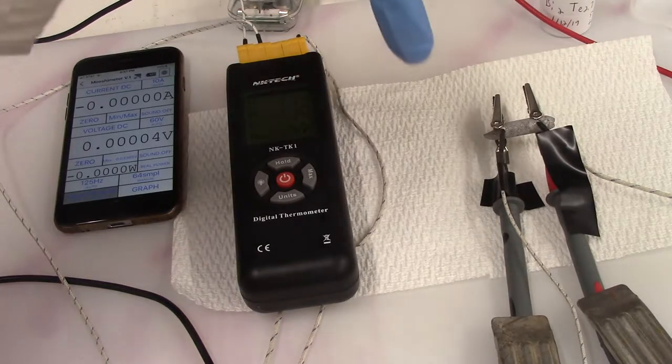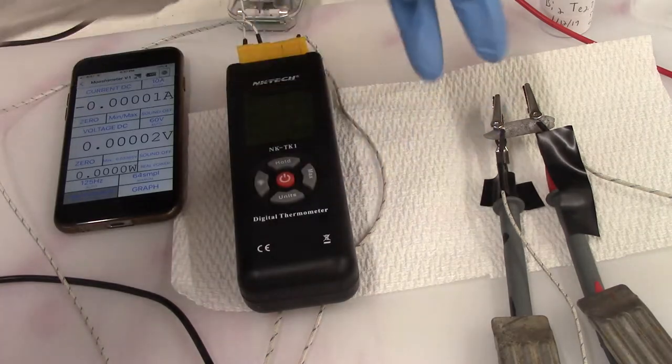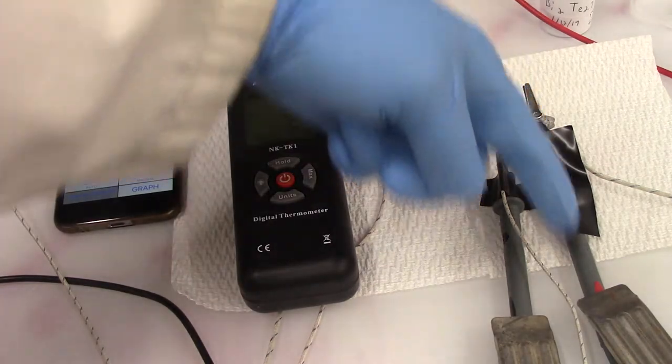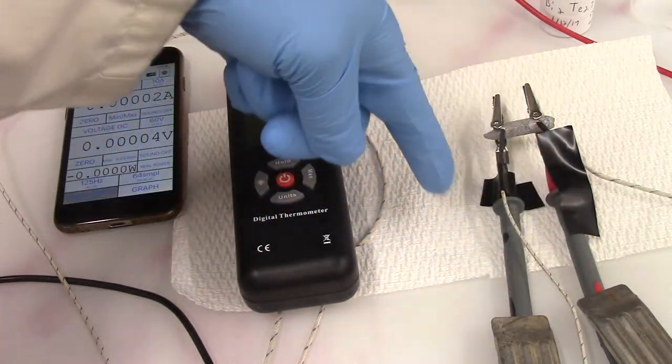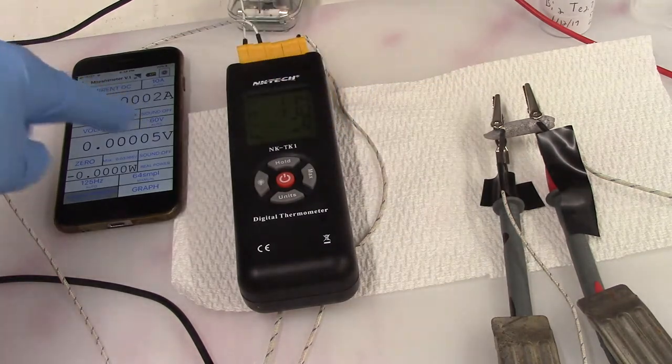What I have set up here is two different devices. So this probe here, this red probe and this black probe, is to a multimeter. So this is a multimeter over here.